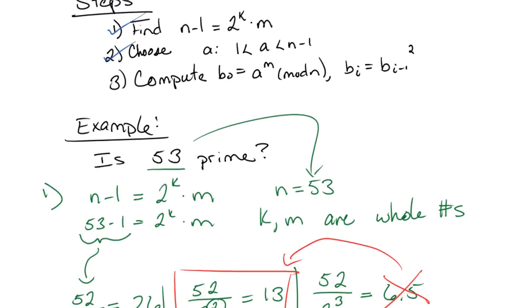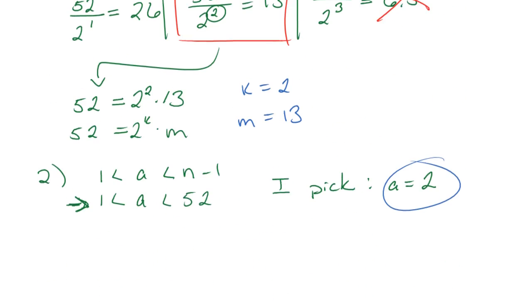Alright, now step 3 is where we do most of our computing. We're going to start by computing b0 equals a to the m mod n. b0 equals a to the m mod n. Okay, so I'm going to fill in those values. 2 to the 13 mod 53. Note it is 53, not 52. There is a difference.